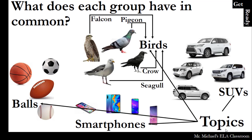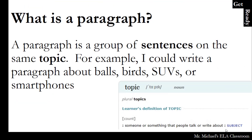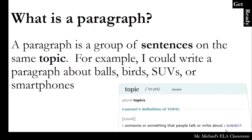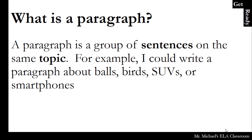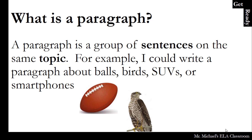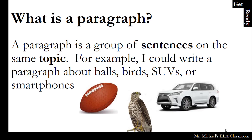We could look at these as different topics. These are all topics because they are all nouns. So what is a paragraph? A paragraph is a group of sentences on the same topic. For example, I could write a paragraph about balls, birds, SUVs, or smartphones.